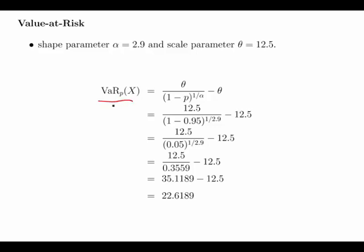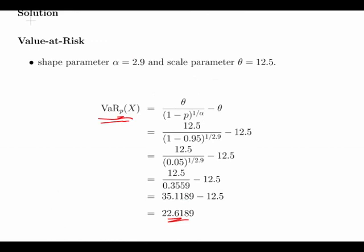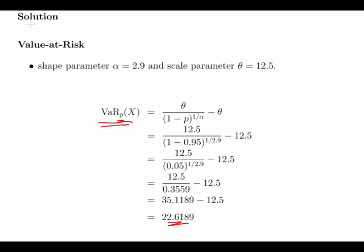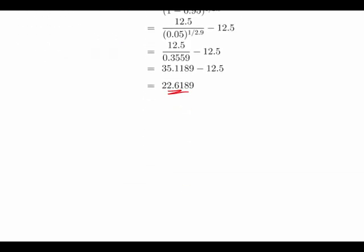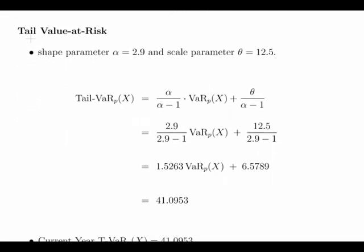The value at risk at a security level p of X is 22.6189. That was done in the previous video, so I'm just going to give you that there. You could pause the screen and have a look if you want to check it.